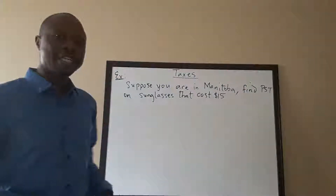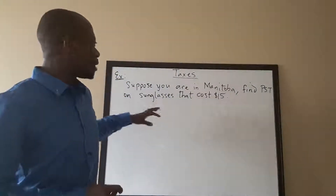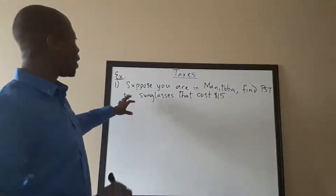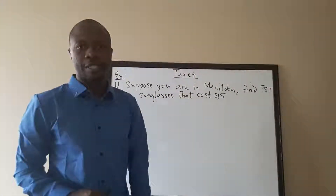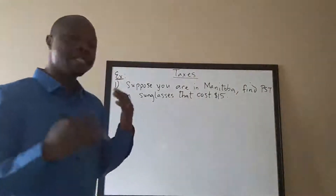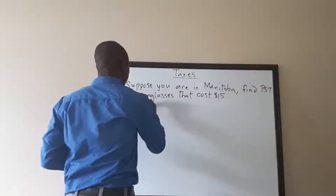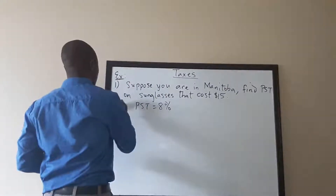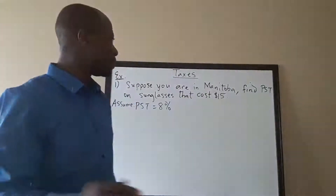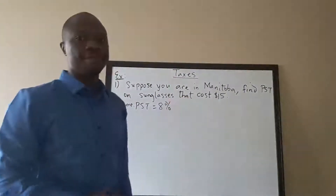We're continuing further and moving on to taxes. The example says suppose you're in Manitoba and you need to find the PST on sunglasses that cost $15. PST is a provincial sales tax. We'll assume the PST in Manitoba is 8%.